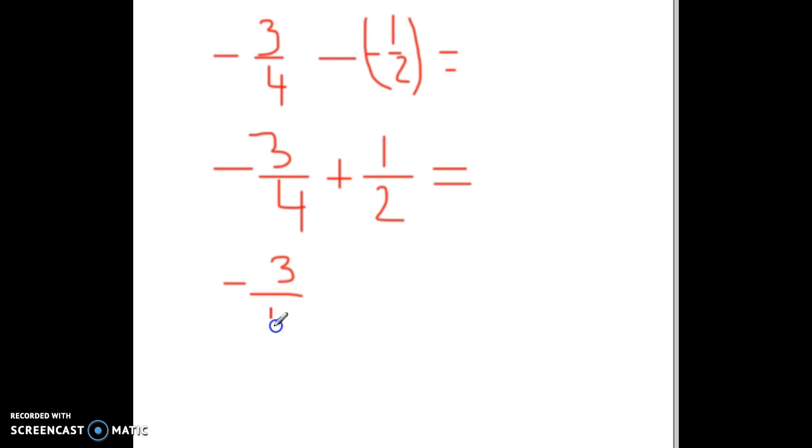By now you should be able to recognize some of these easier common denominators. So we would rewrite one-half. If you multiply two times two you get four, and then one times two you get two. So when you rewrite it, you should end up with negative three-fourths plus positive two-fourths. Well, what's negative three plus positive two? Negative one, and it's going to be negative one-fourth. You can't simplify that, so we're done with that problem.